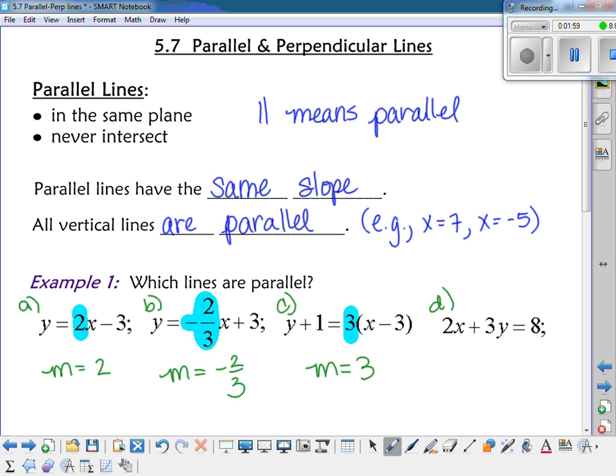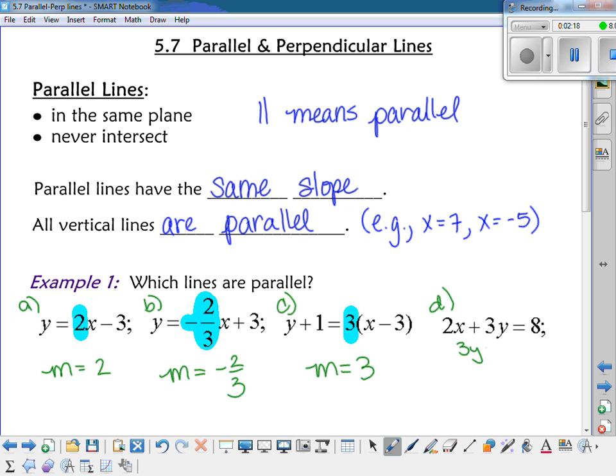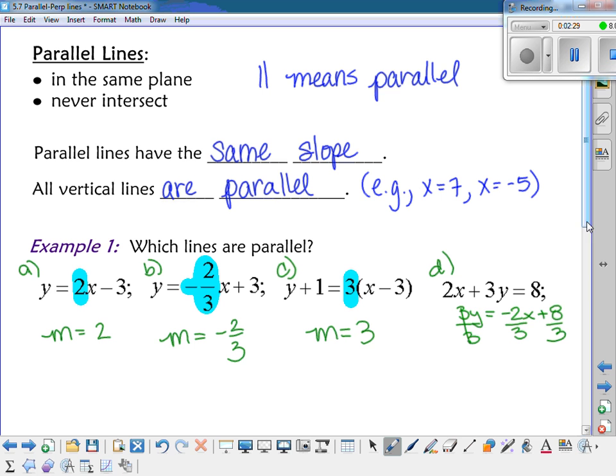So, the slope isn't obvious on D, but what could we do to figure out what it is? We could subtract the 2x because what you want to do is you want to get the y alone. Get it into y equals mx plus b form, and then you'll be able to tell what the slope is. So if we subtract the 2x, we get 3y equals negative 2x plus 8, and then you would have to divide by 3. So what is the slope of that line? Negative 2 thirds.